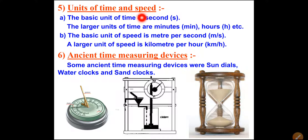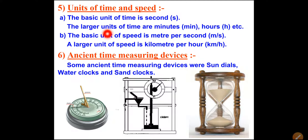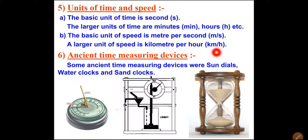Now the units of time and speed. The basic unit of time is second, denoted by small 's'. Larger units of time are minutes, denoted by 'min', and hours, denoted by 'h'. The basic unit of speed is meter per second, written as m/s - both letters are small. The larger unit of speed is kilometer per hour, written as km/h.